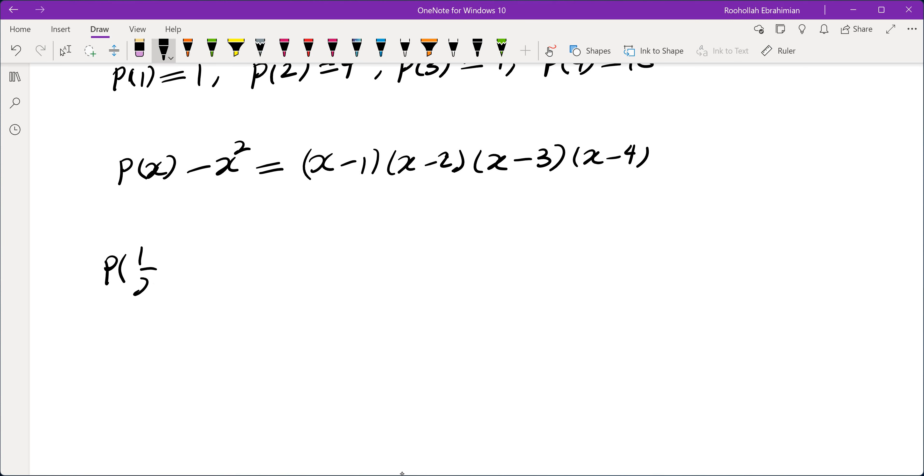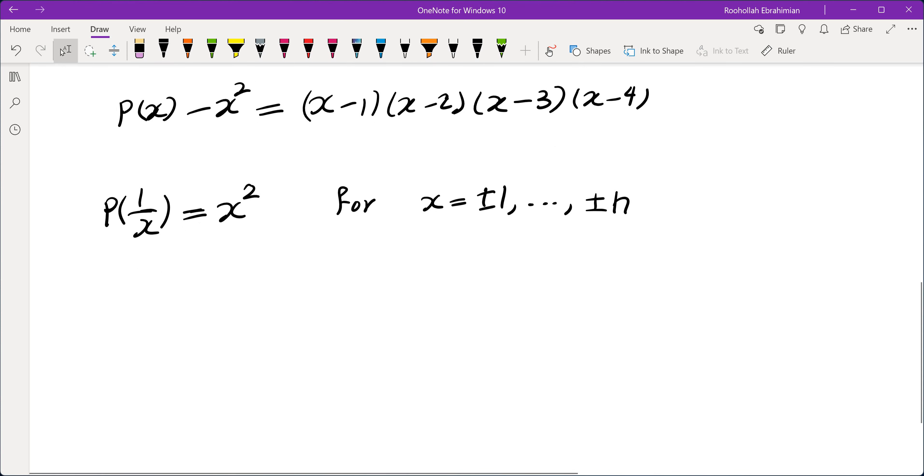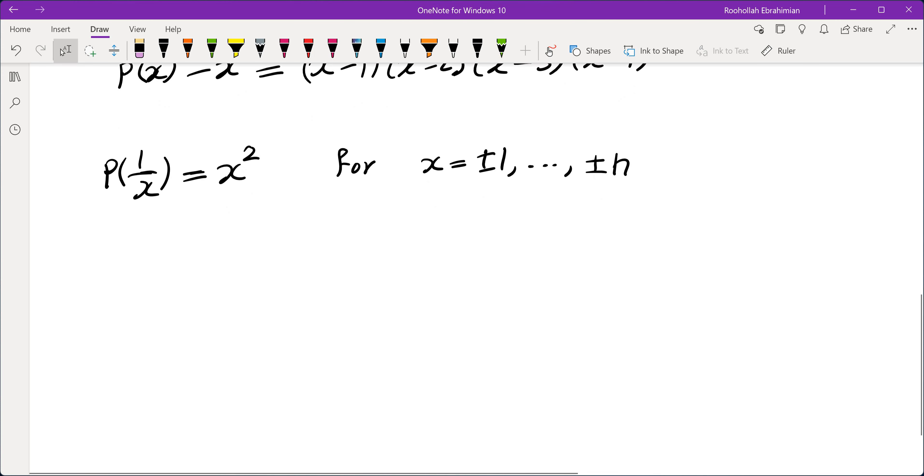The assumption is p of 1 over x is equal to x squared for x equals plus minus 1 all the way to plus minus n. So let's first turn this one into a polynomial equality. We have a 1 over x, so we'll have to clear the denominator and see what we get. If we clear the denominator, we're going to have to multiply by x to the 2n.